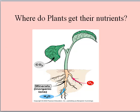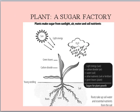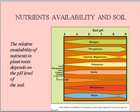Where do plants get their nutrients? Nutrients availability in soil: the relative availability of nutrients to plant roots depends on the pH level of the soil.